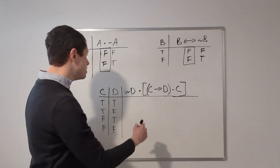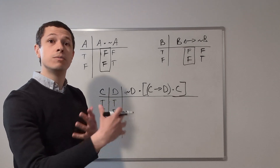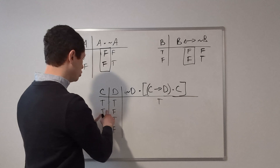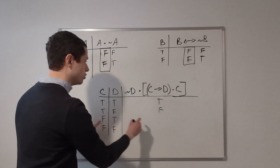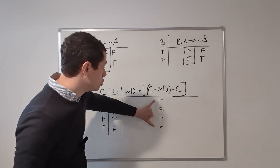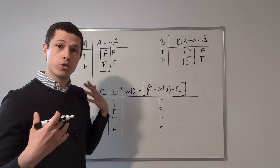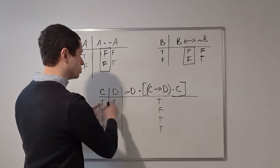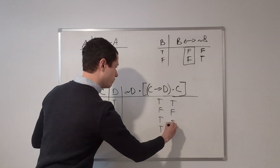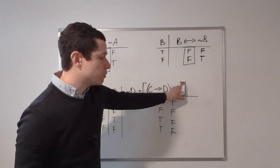Starting with C implies D: a conditional is false only if the antecedent is true and the consequent is false; otherwise it's true. True implies true is true. True implies false is false. False implies true is true. False implies false is true. Now we conjoin that conditional with C. Conjunctions are true only when both conjuncts are true. True and true is true. False and true is false. True and false is false. True and false is false. Those are the truth values for the entire bracketed area.